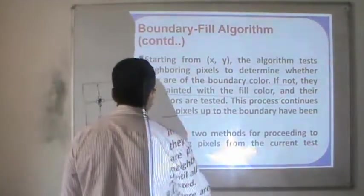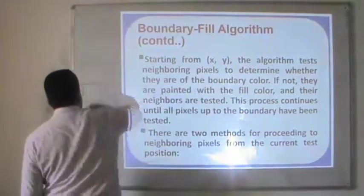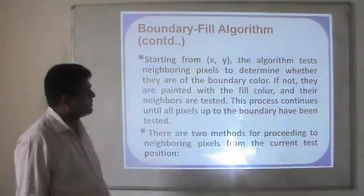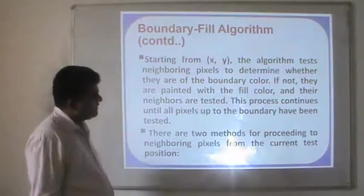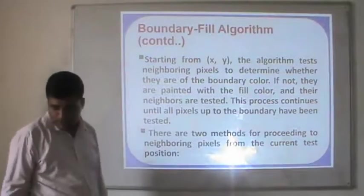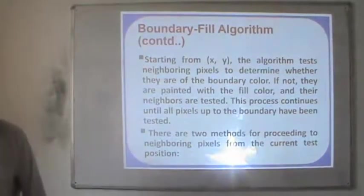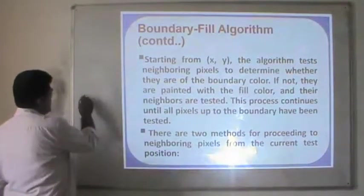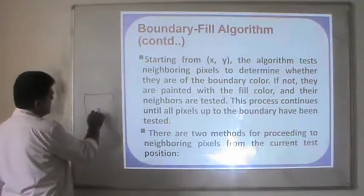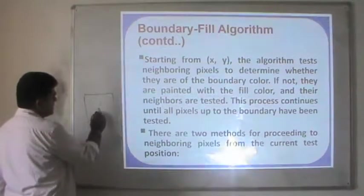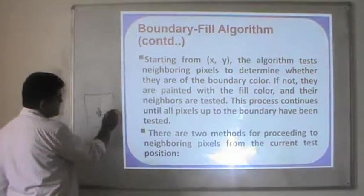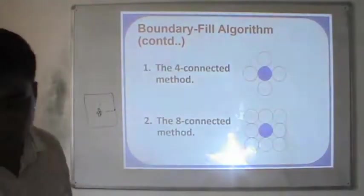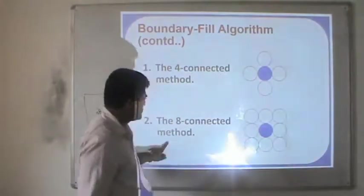Starting from (x, y), the algorithm tests neighboring pixels to determine whether they are the boundary color. If not, they are painted with the fill color and their neighbors are tested. This process continues until all pixels up to the boundary have been tested. There are two methods: the 4-way connected method and the 8-way connected method. In 4-way, we move to the four adjacent pixels (up, down, left, right). In 8-way, all 8 surrounding pixels are colored.